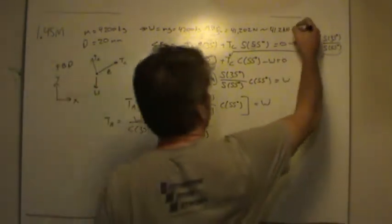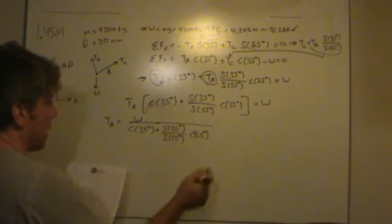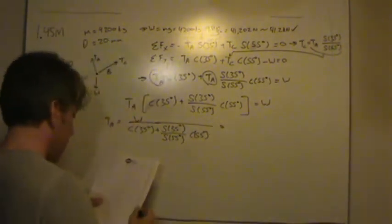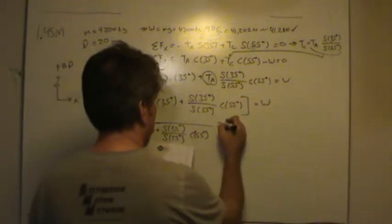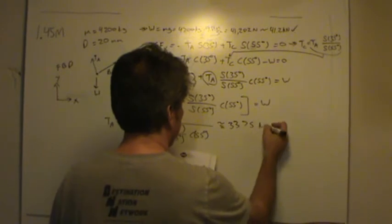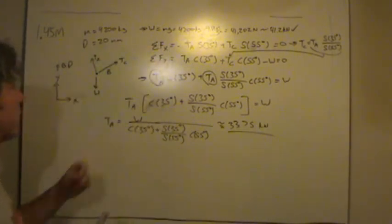Okay, now we know the weight. Cosine and sine is just a button on your calculator, so there's no point in belaboring this any further. This is about 33 and 3 quarters kilonewtons. So there's the tension in rod A.